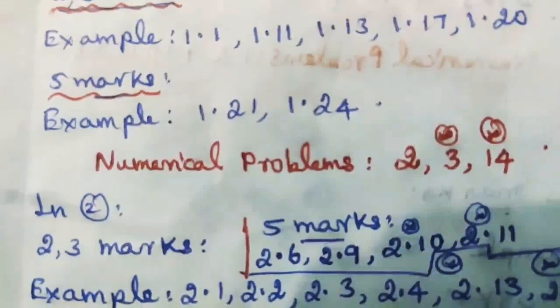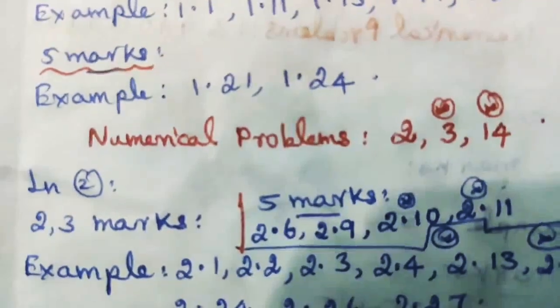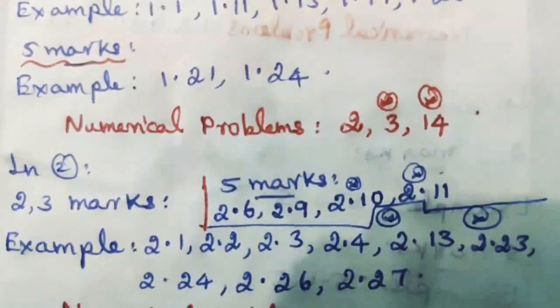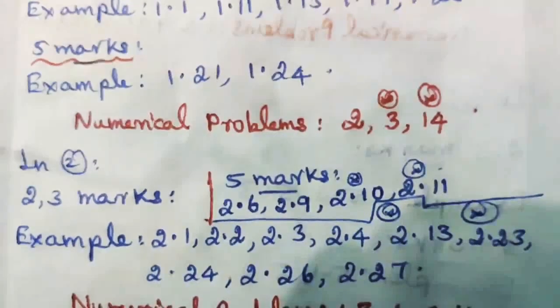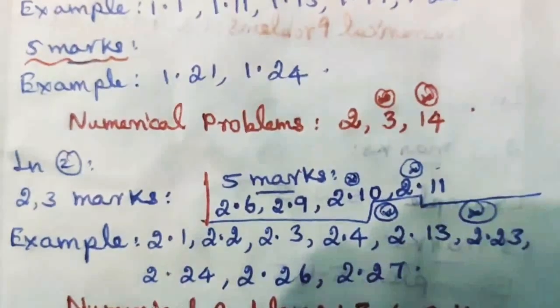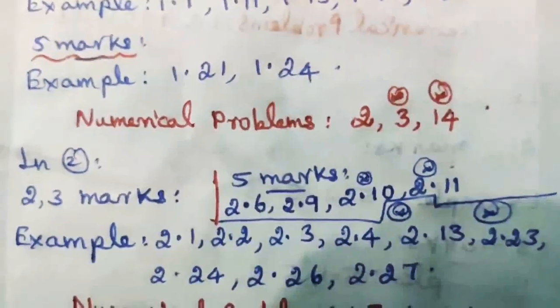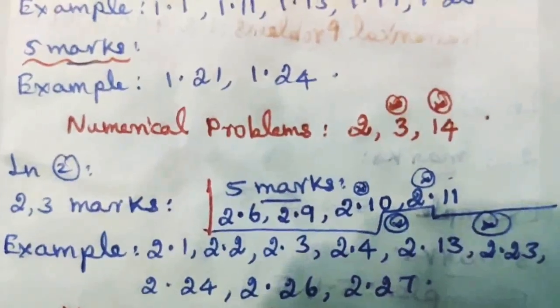Lesson 2, 2 and 3 marks examples: 2.1, 2.2, 2.3, 2.4, 2.13, 2.23, 2.24, 2.26, 2.27. These are very simple problems, so refer to them.